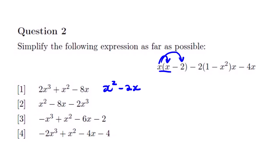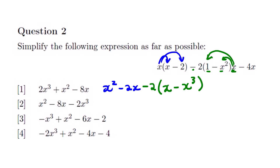The next bracket is a bit different from the first because we have two terms on both sides of the bracket, and there is a negative sign here, so we should be very careful. We are going to rewrite this negative 2 and open the bracket again. x multiplied by x gives x, and x multiplied by negative x gives negative x to the power 3. Close bracket, minus 4x. We don't do anything to this 4x because there is no bracket before or after it.